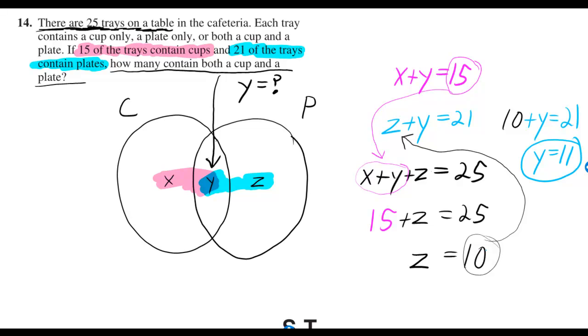Once you realize that there's 10 that are plates only, but there's 21 that have plates, then there must be 11 that have plates and cups.